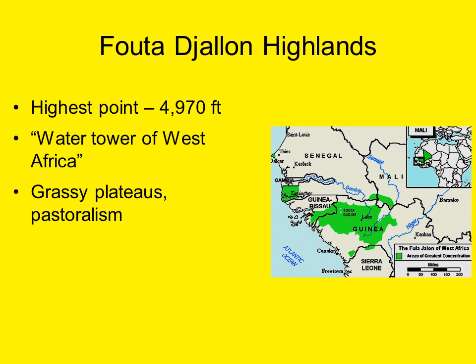The Futa Jalon highlands, sometimes called the 'water tower of West Africa,' are the source of many West African rivers including the Niger, the Senegal, and the Gambia rivers. Winds coming off the Atlantic Ocean hit the Futa Jalon highlands, the water condenses, collects on the ground, and major rivers are formed. This area has also been a major center of Islam in West African history.